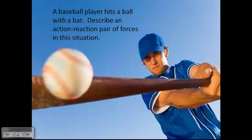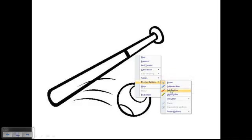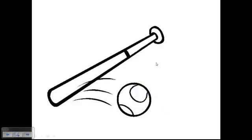Now that we have that idea, let's look at an example of an action-reaction pair. A baseball player hits a ball with a bat — describe the action-reaction pair of forces in this situation. Remember, the action and reaction act on different objects. If we say the action force is the bat going this way on the ball, the reaction is the ball going this way on the bat. The bat is acting on the ball, but the ball is acting on something different — it's acting on the bat. They're both acting on different objects. There's your action-reaction pair.